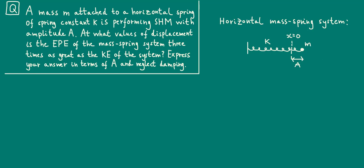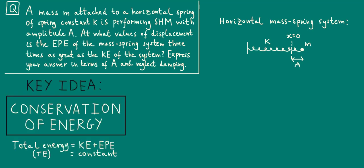So the key idea we'll be using to attack this problem is that of conservation of energy, namely that if you add the kinetic energy and elastic potential energy, you get the total energy of the system, the mass spring system, which remains constant throughout the oscillations. And as an abbreviation for total energy, I'll just be writing TE in what follows.